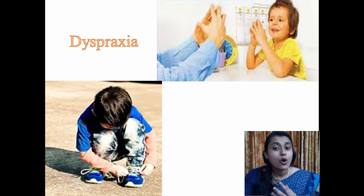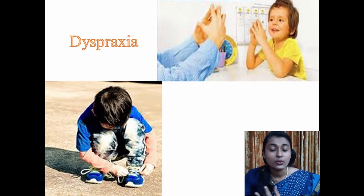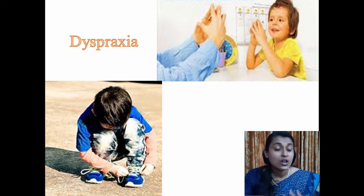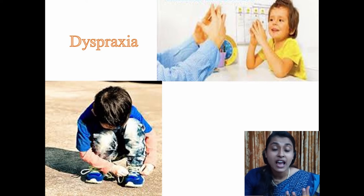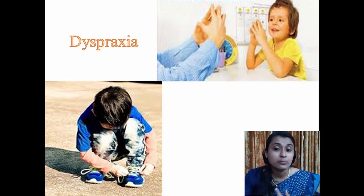Dyspraxia is a motor coordination disability, also known as sensory integration disorder. Children with this disability have delayed motor development below the expected level for their age and intelligence. Features include impairment in motor coordination resulting in careless movements, poor balance, poor hand-to-eye coordination, exaggerated movements such as flapping hands while running, falling easily while sitting or walking, and difficulty performing certain tasks like tying shoelaces.